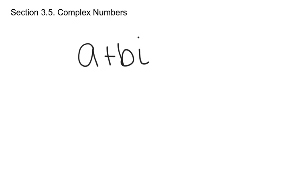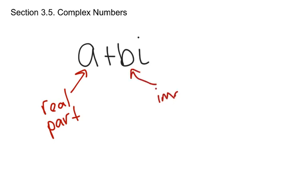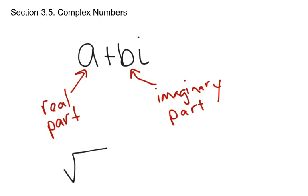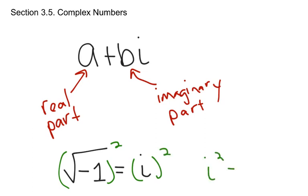Most complex numbers are written in the form a plus bi, where a is called the real part or the real component, and b is the imaginary part or the imaginary component. We know it's the imaginary part because it has the i. By definition, we said that the square root of negative 1 was the imaginary unit, i. And if you square both sides, we found out that i squared was the real number negative 1.